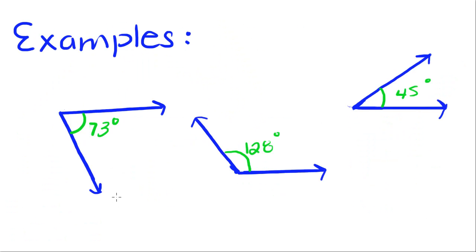So let's do some examples with classifying angles. So this first angle we have right here is measured 73 degrees. And since 73 is less than 90 degrees but greater than 100 degrees, this is an acute angle.